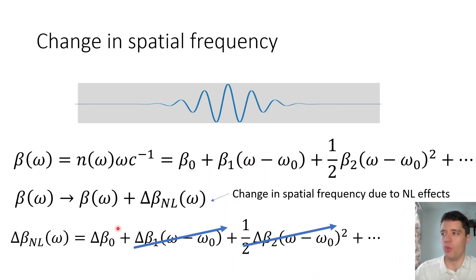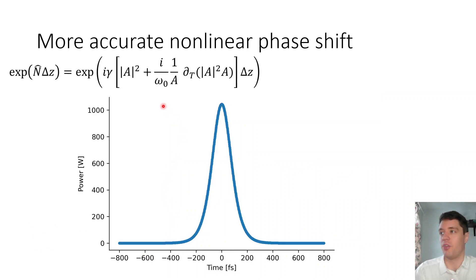But what happens if we don't just include the zero-order term here? What happens if we also include the first-order term, which is a frequency-dependent part of the non-linear change to the spatial frequency? Well, it turns out that what happens is that we get both the same beta 0 term from before that just depends on the local power of the field, but also this other term here, which depends on the local gradient of the pulse.